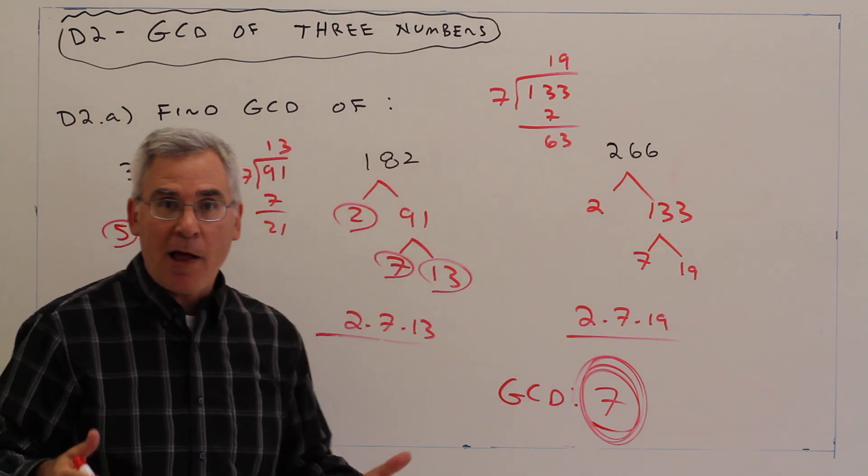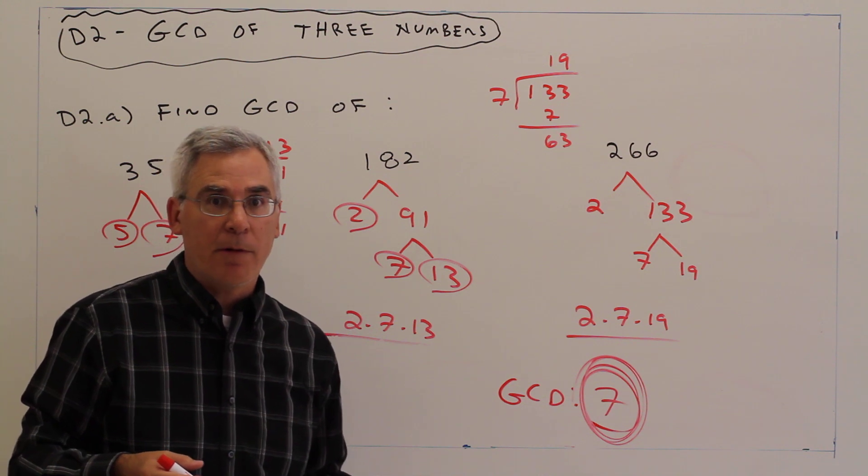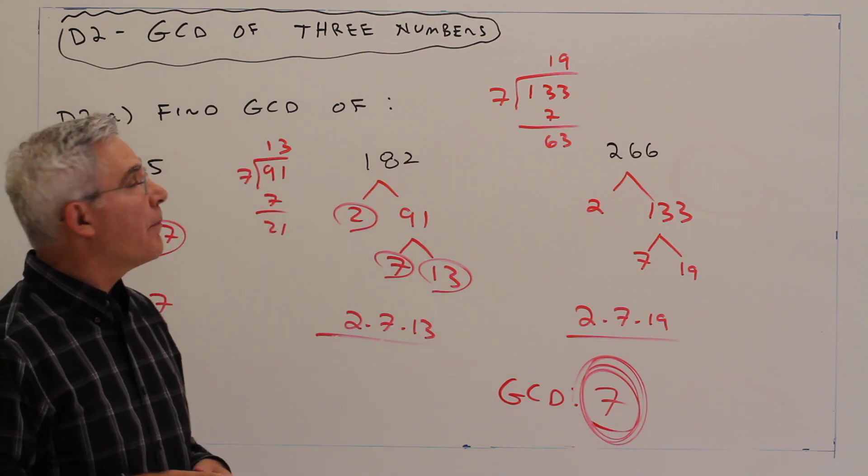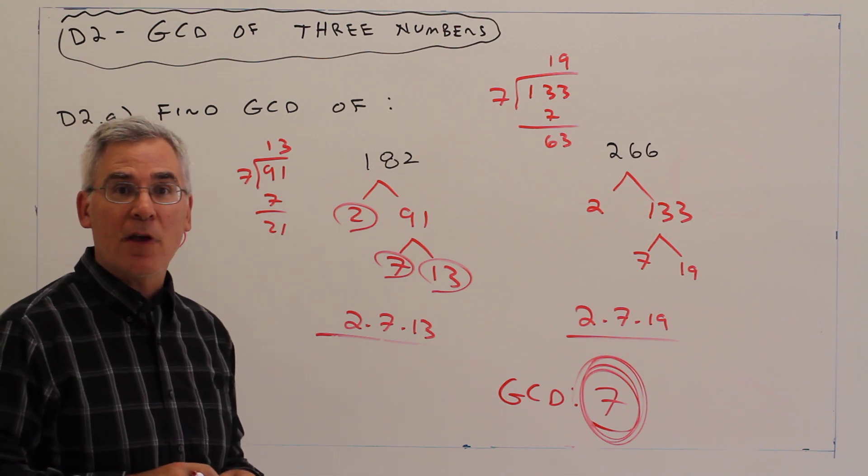And the same process would apply for four, five, six numbers, etc. And there you have it: how to find the greatest common divisor of three numbers using prime factorization.